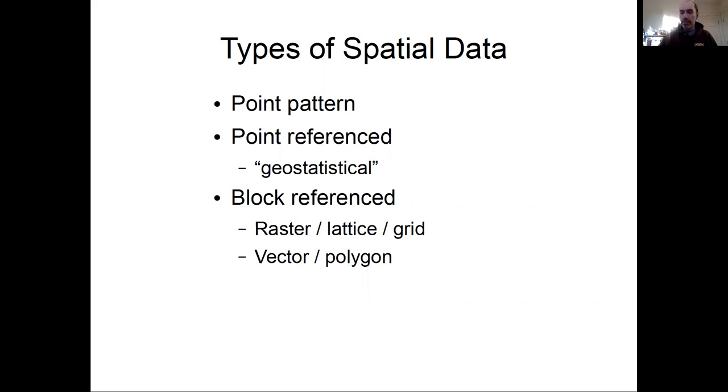Point pattern data, point reference data, and block data. Point pattern data is when what you're interested in is the spatial pattern of the points themselves, not any sort of attribute associated with those points. Point reference data is when what's of interest is actually the attributes at locations, but those locations have some XY or XYZ coordinate, and this is also known as geostatistical data.